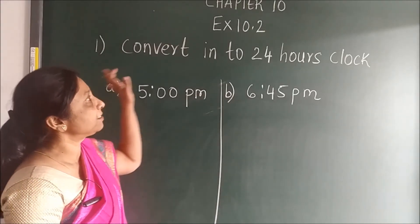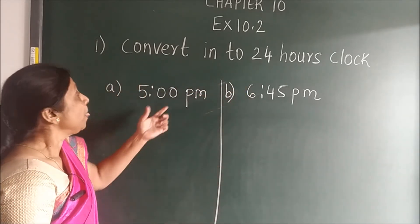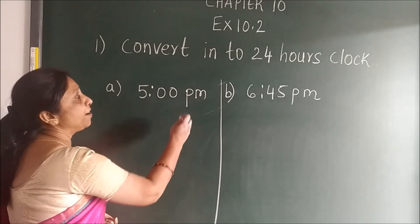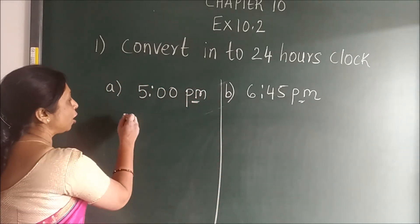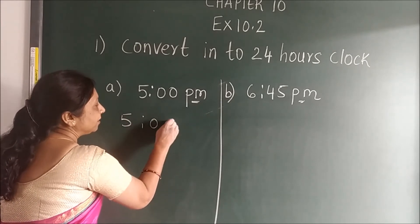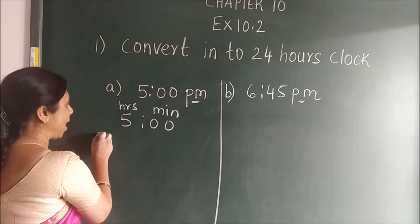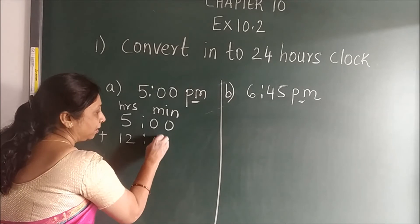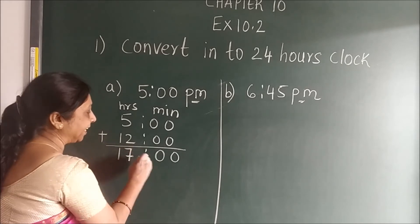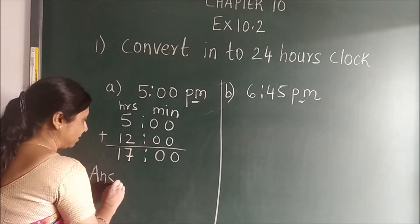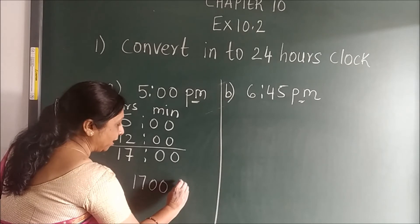Now in exercise 10.2, it is converting into 24-hour clock. The time is given in PM. Remember, whenever the unit is PM, what you have to do in 24-hour clock: you write the same number — this is hours, and this is minutes. But when you write in 24-hour clock, you have to add 12 hours and 0 minutes. When you add, you get 17. When you write the final answer, you write 1700 hours.